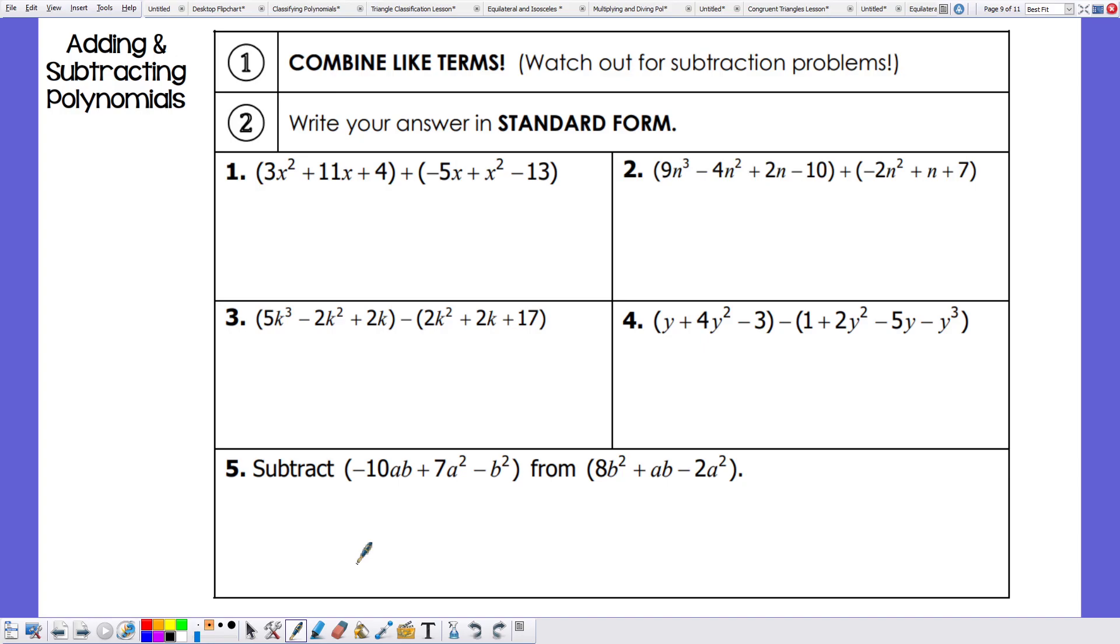3x squared plus 11x plus 4 plus negative 5x plus x squared minus 13. When you are adding two polynomials together, what I do is I simply drop the parentheses. So we have 3x squared plus 11x plus 4 plus, well, we have a negative 5x. So actually, I'm just going to write minus 5x plus x squared minus 13.